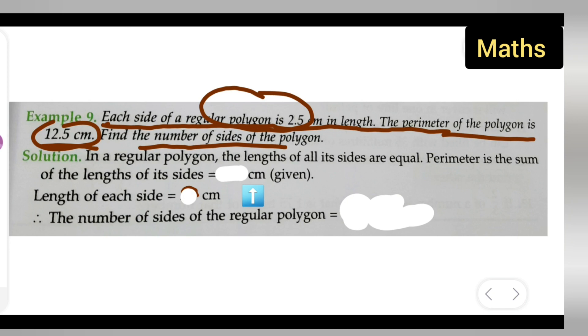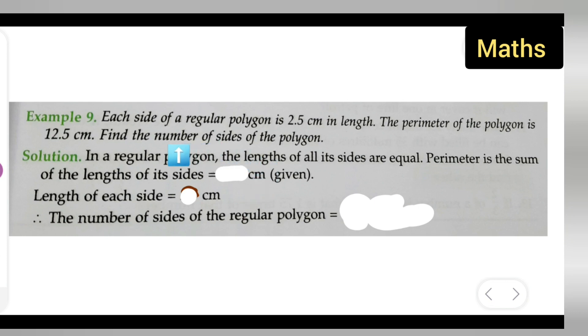So let us find out how to solve this. First, write down: in a regular polygon, the lengths of all its sides are equal. The perimeter is the sum of the lengths of its sides, which is given as 12.5 centimeters.